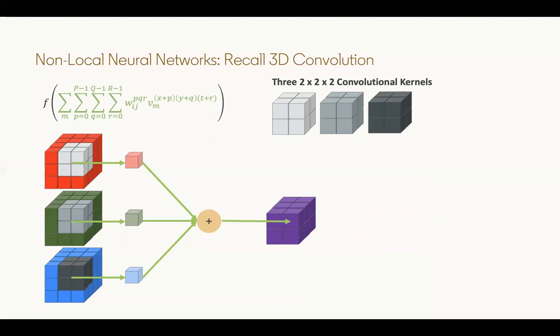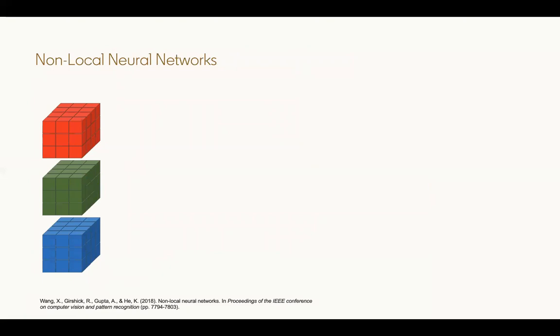Another technique is called non-local neural networks. Just as a refresher, recall in 3D convolution how for a single output unit only the contribution from a certain local region is accounted for, and this is controlled by your dimension for the 3D kernel used.